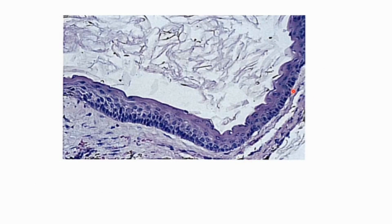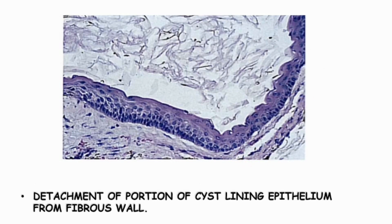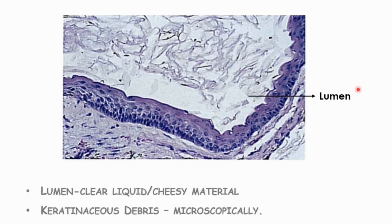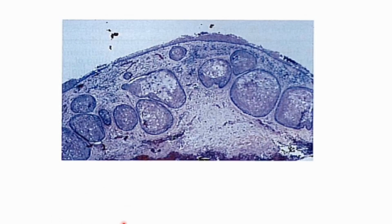There is detachment of portions of the cystic lining epithelium from the fibrous wall at some regions, which is commonly seen. The lumen contains either clear fluid or cheesy material, which microscopically consists of keratinaceous debris.